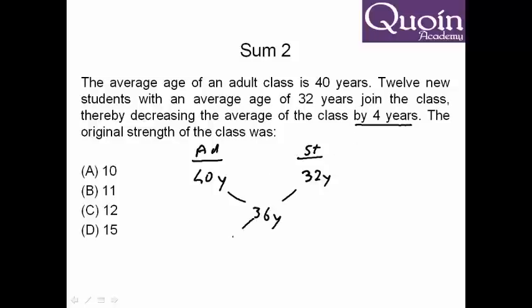You can do alligation. So 40-36 is 4. 36-32 is 4. You get the ratio is 1 is to 1. So the number of students given is 12. 12 new students have joined. That means number of students is 12. So number of adults will also be 12. So the answer out here will be 12.